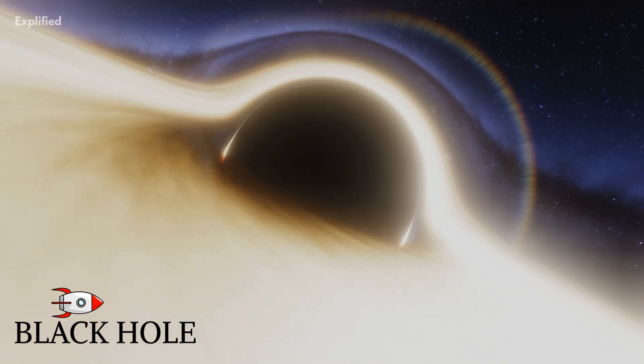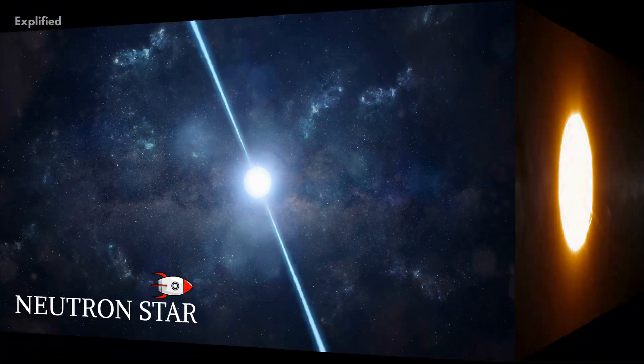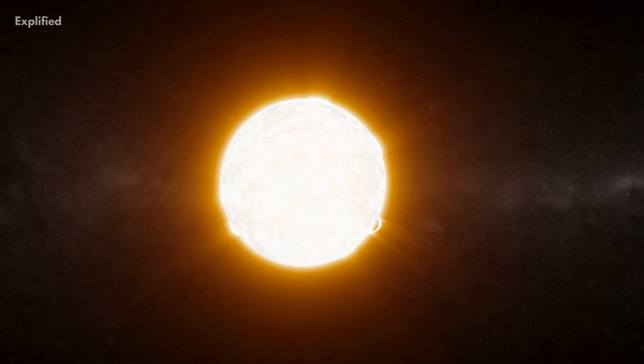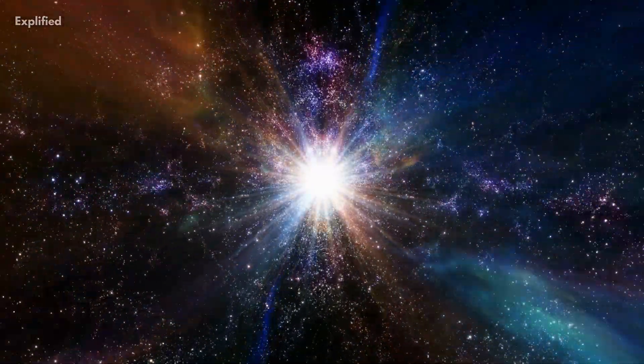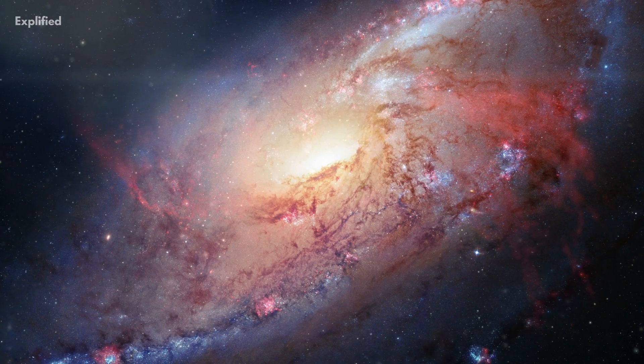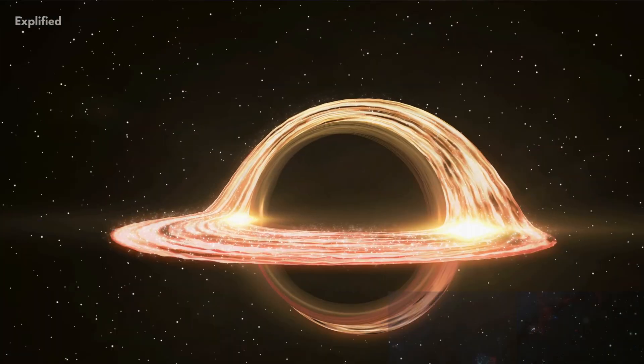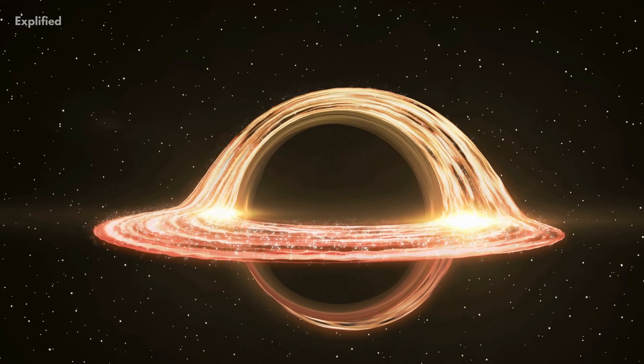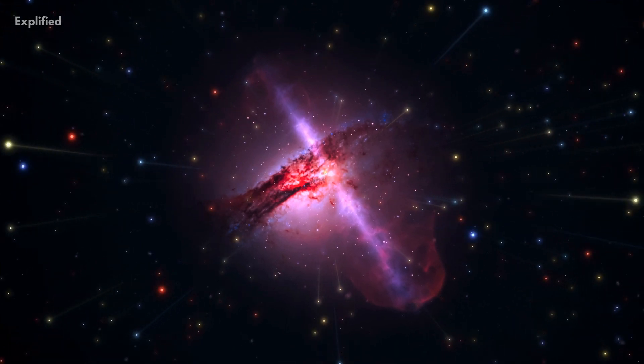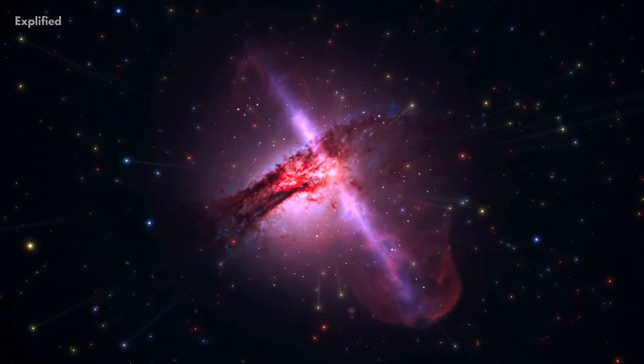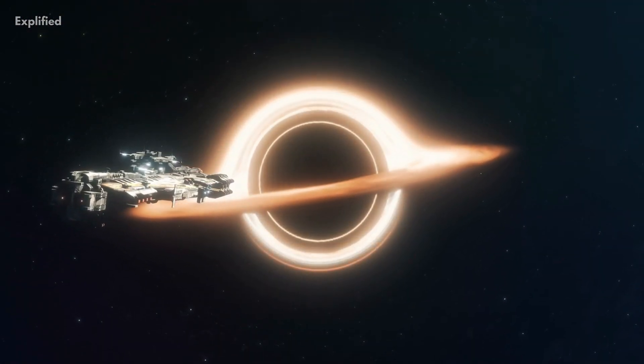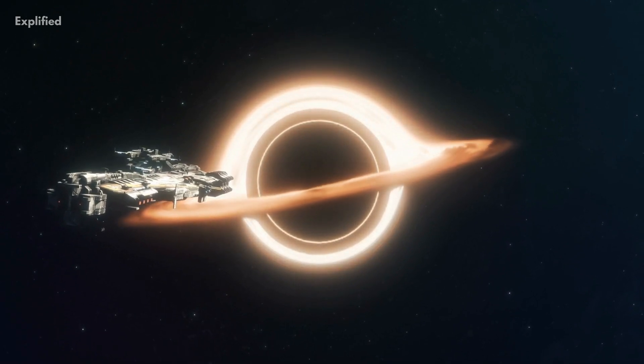This is mainly dependent on the mass of the star that has turned into a supernova. Stars that are extremely massive and have a heavy core normally turn into black holes after the supernova. Otherwise, they become neutron stars. A black hole is considered far more powerful than a neutron star.